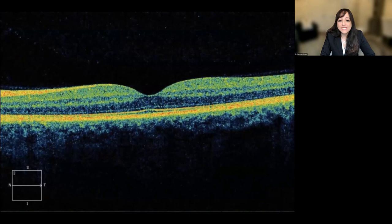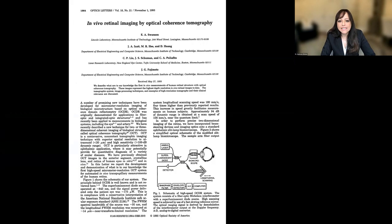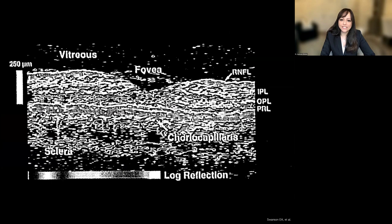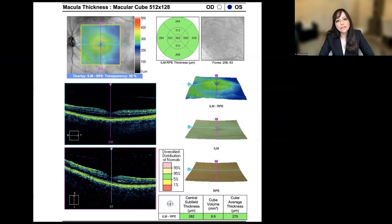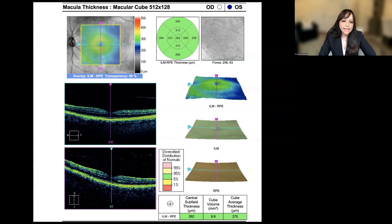This is an OCT as we see it today. In 1993, Swanson et al. published the first images of in vivo OCT. We've come a long way — now you can see all the beautiful layers of the retina. This is a Cirrus HD OCT Macular Thickness Analysis Report, which is mostly what I use in my practice, and I'll be using it to present my cases today. The talk is really applicable to all OCT brands.